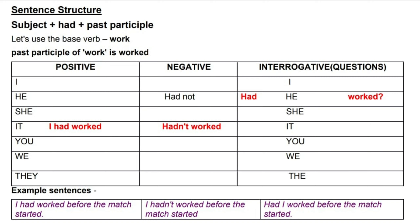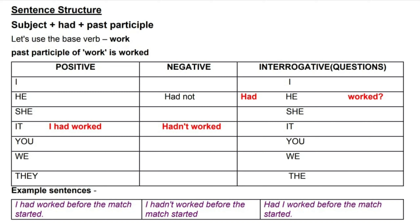Since we are using 'work' as our base verb, the past participle is 'worked.' So the positive forms are: I had worked, we had worked, you had worked, they had worked, he had worked, she had worked. Our example sentence for the positive is: 'I had worked before the match started.'